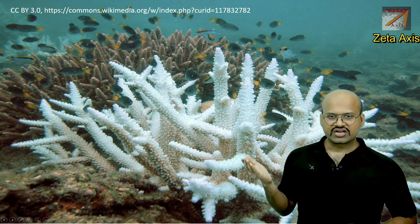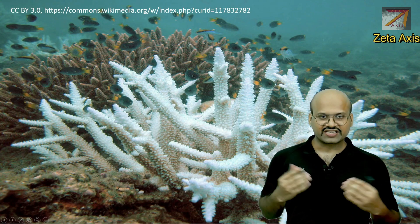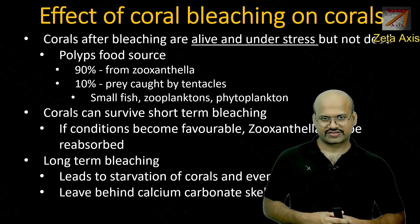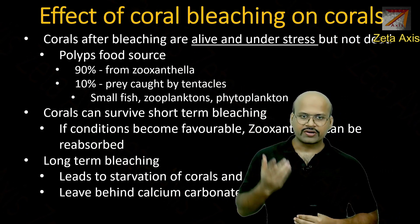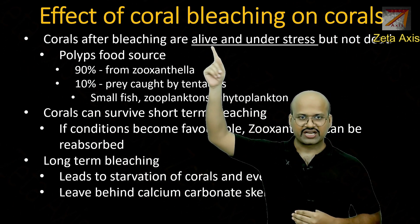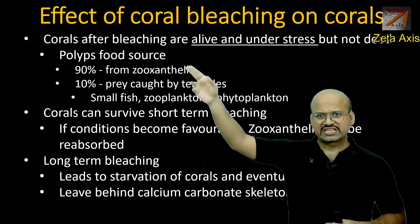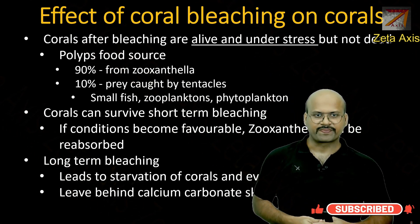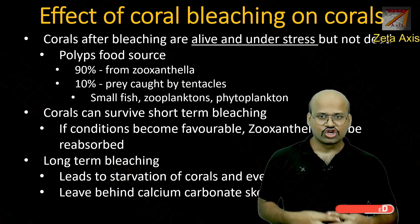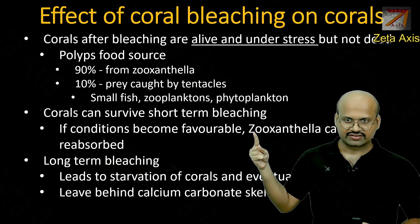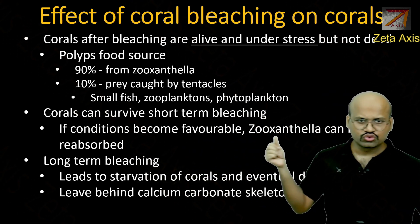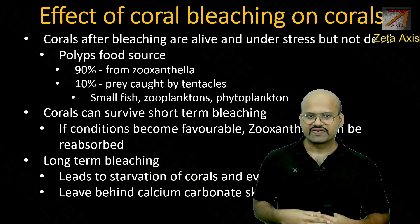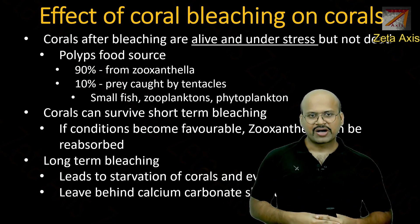This is how the coral reefs appear once they have ejected the zooxanthellae. Now let's see the effect of coral bleaching on the coral reefs. When the coral reefs are bleached, they do not die — they are alive but under stressful conditions. Since 90% of the food was supplied by zooxanthellae, losing it reduces the food supply of the polyps. Corals can survive short-term bleaching, and if conditions become favorable, the zooxanthellae can be reabsorbed and the polyps return to their normal state.